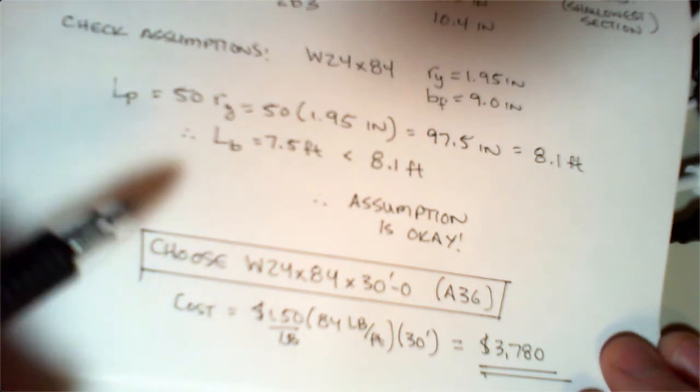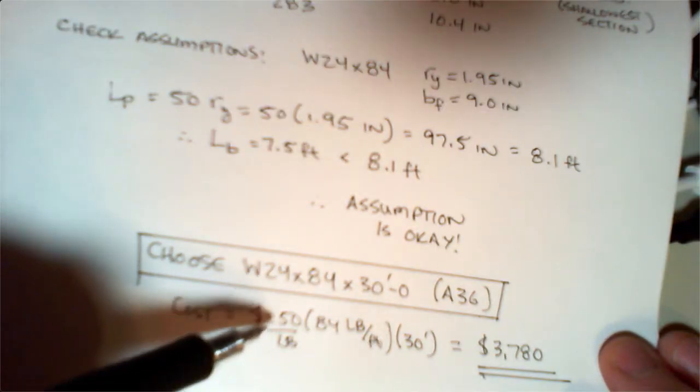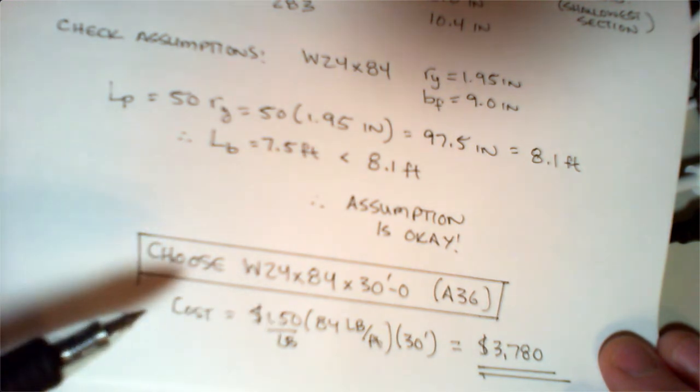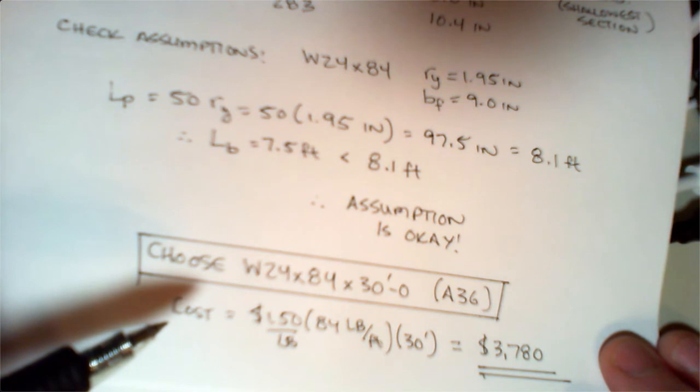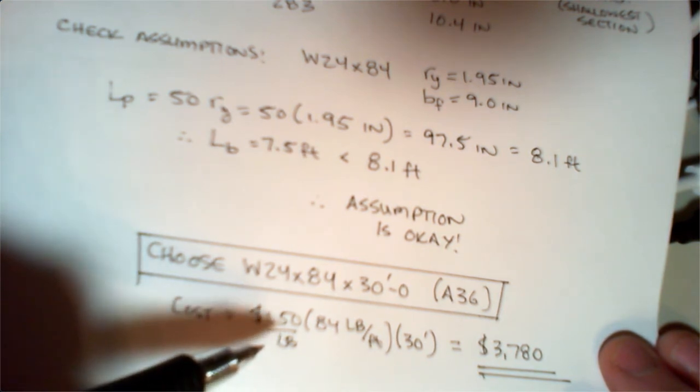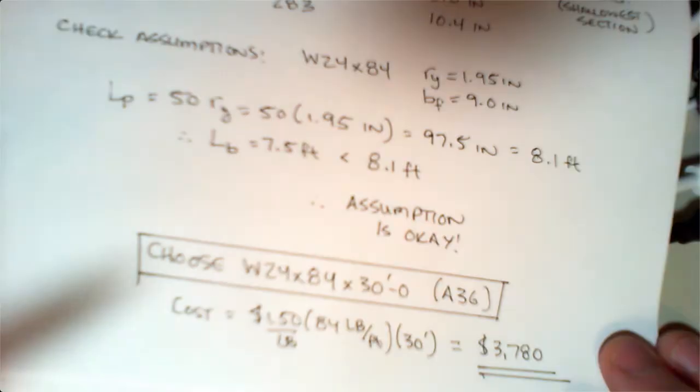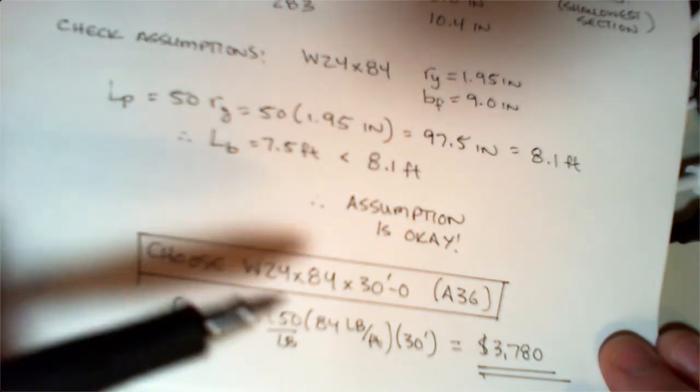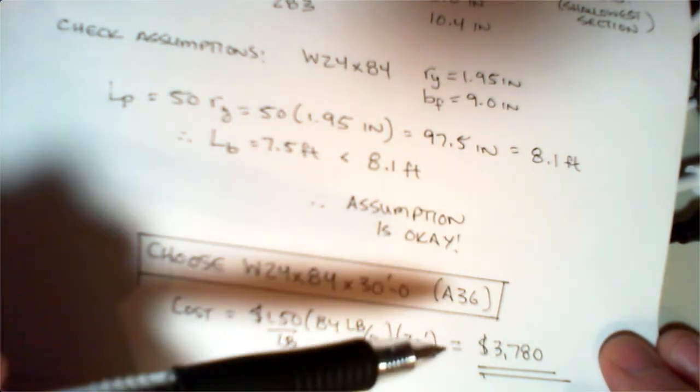Our lightest shape coming out of that table is going to be a 24 by 84. Just as a basis of comparison, if it's 30 feet long and A36 steel, if we assume a dollar fifty a pound—which is fairly in the ballpark estimate of pricing, some of the research we did this semester showed it was a little lower, around a dollar a pound—the cost of this beam alone is about $3,700.